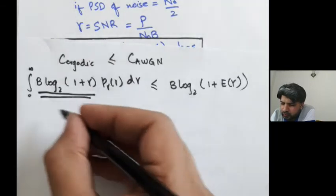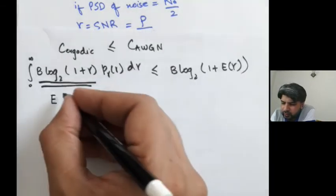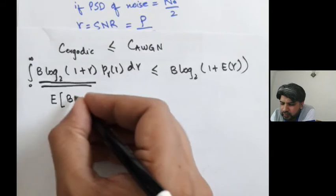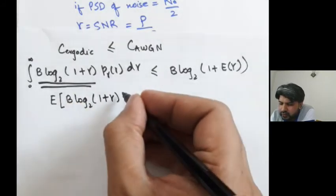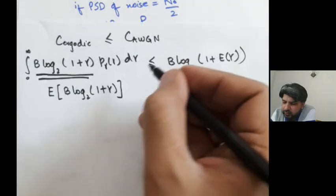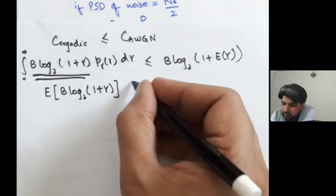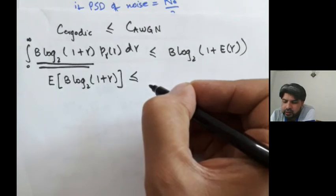That means if you compute expectation of this entire thing, B log base 2 of 1 plus gamma, through Jensen's inequality, this expectation would be less than or equals to B log base 2 of 1 plus expected value of gamma.